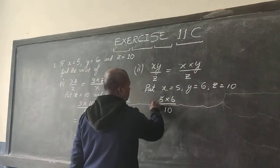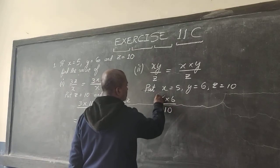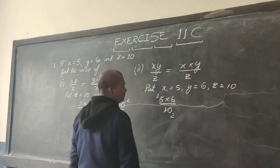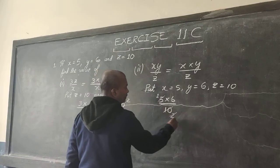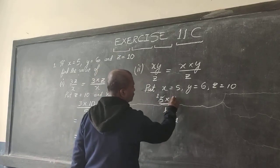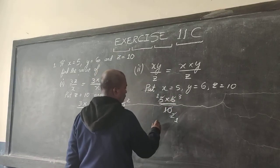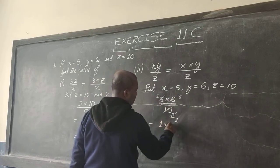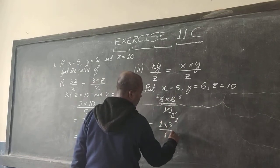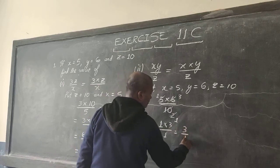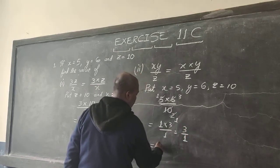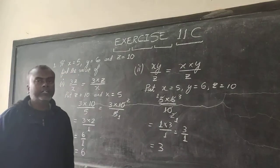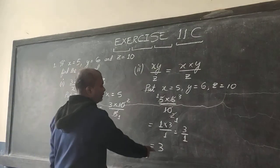Then we can do the canceling. 5 into 10 is 2. Again 2 into 2 is 1. 2 into 6 is 3. So what do we have remaining? 1 into 3 divided by 1. That is 3 divided by 1. That is 3. So the answer to this particular algebraic expression is 3.